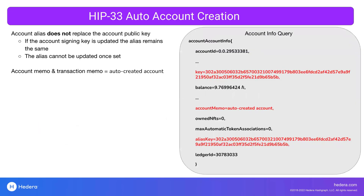I want to make a point that the alias for the account does not replace the account public key. On the right, you can see the response to an account info query for this account. The key on the account is a separate property, and the account alias key is a separate property. So if you update your account keys, it will only update the key value. At this time, once you have an alias on your account, you cannot update it — the alias key is immutable. You can also see that once you create the account by transferring to the account alias, the memo field has 'auto created account' as a note for how this account was created.